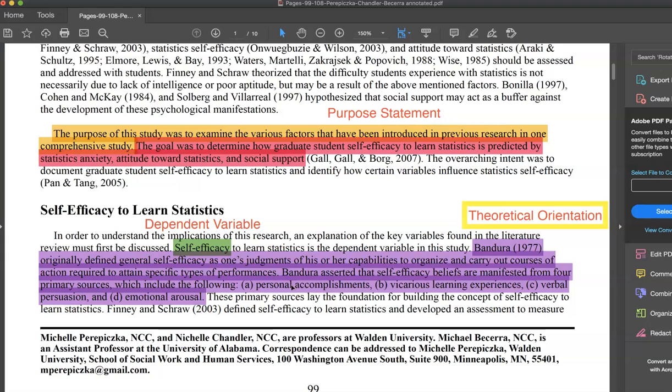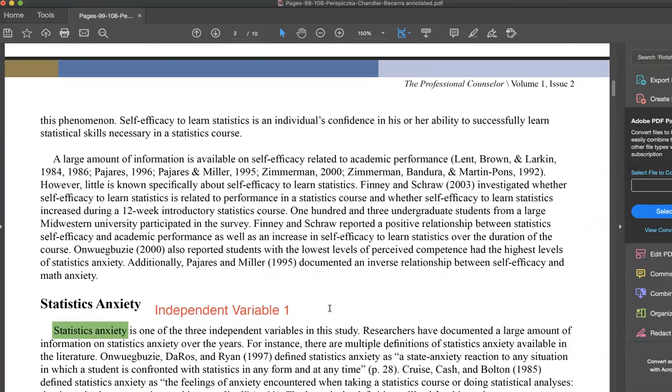They then go on to describe their dependent variable, the outcome or measure that they're trying to determine. In this case, they want to measure student self-efficacy. Now, they also introduce the theoretical orientation here, and that is Albert Bandura's theory of self-efficacy, the belief that you can do something.